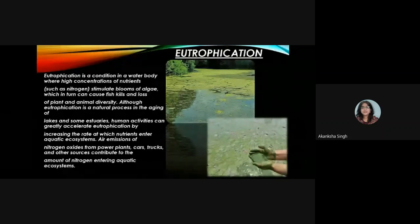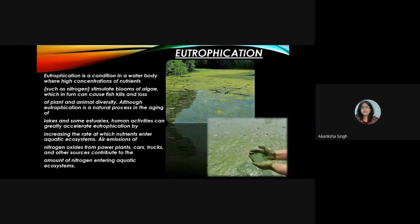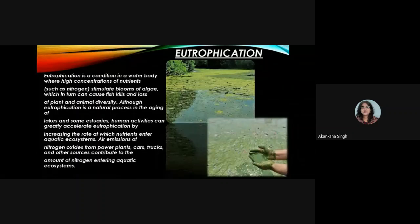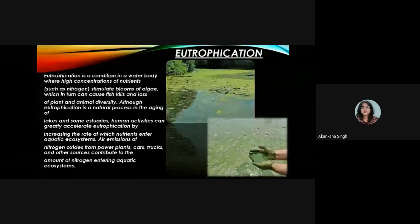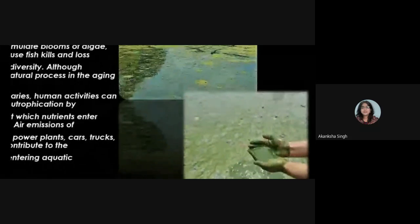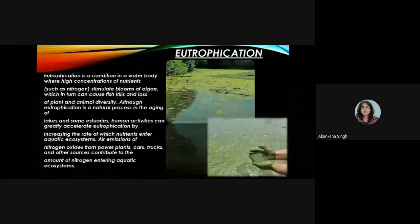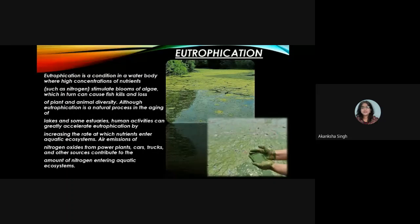Eutrophication is a condition in a water body where high concentrations of nutrients such as nitrogen stimulate blooms of algae, which can cause fish kills and loss of plant and animal diversity. Although it is a natural process in the aging of lakes, human activities can greatly accelerate eutrophication by increasing the rate at which nutrients enter aquatic ecosystems. Air emissions of nitrogen oxides from power plants, cars, trucks, and other sources contribute nitrogen to aquatic ecosystems, making the water unfit for drinking for both humans and animals.